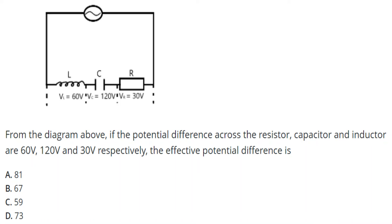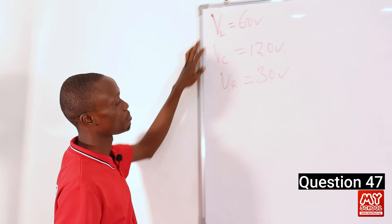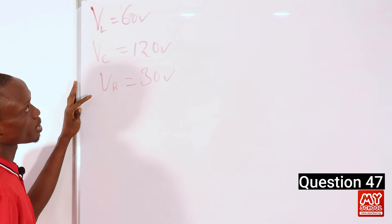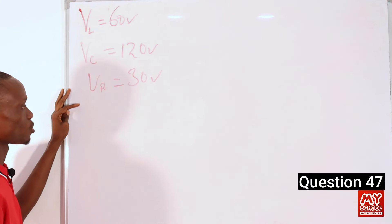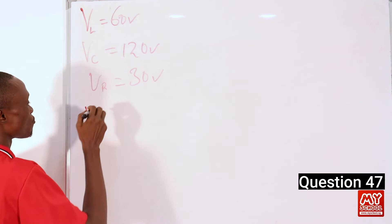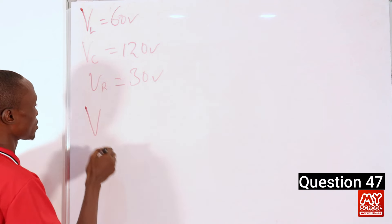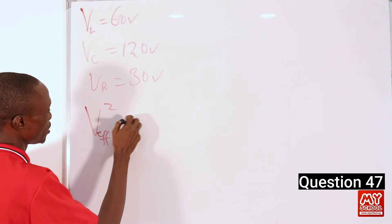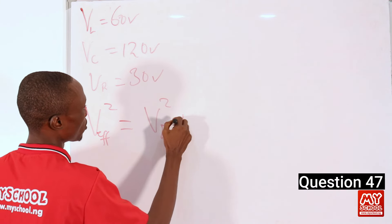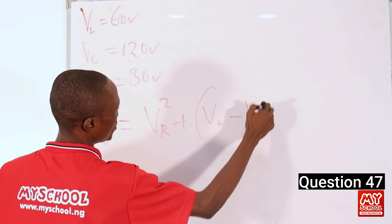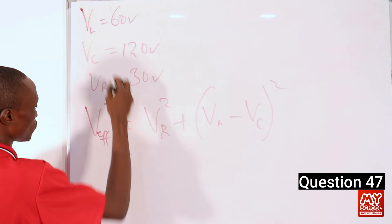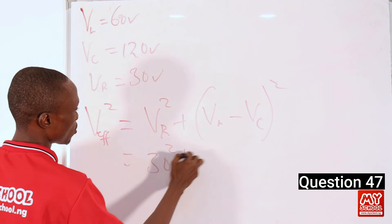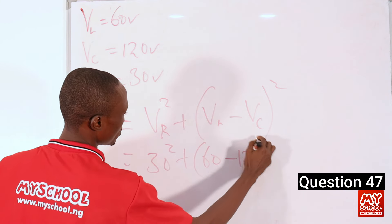Question 47. From the diagram above, if the potential difference across the resistor, capacitor, and inductor are 30 volts, 120 volts, and 60 volts respectively, the effective potential difference is... This question is on an RLC circuit. The effective potential difference is given by: V_eff² = V_R² + (V_L − V_C)². Plugging in: V_eff² = 30² + (60 − 120)², which gives 30² plus (−60)².